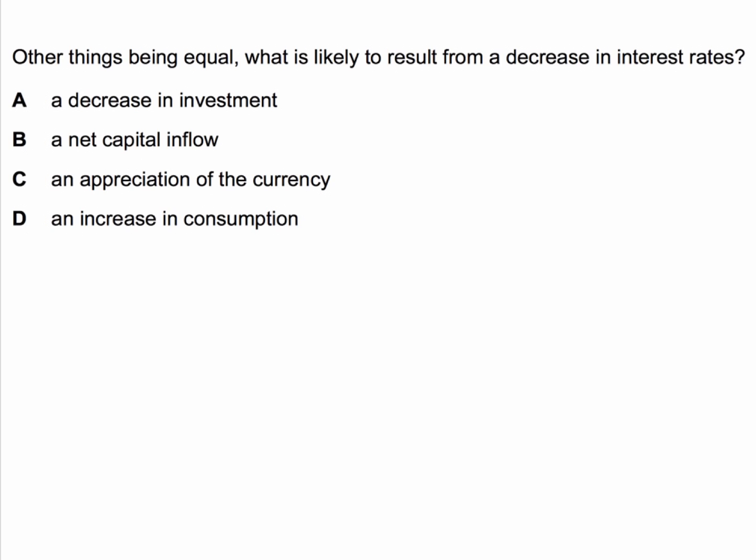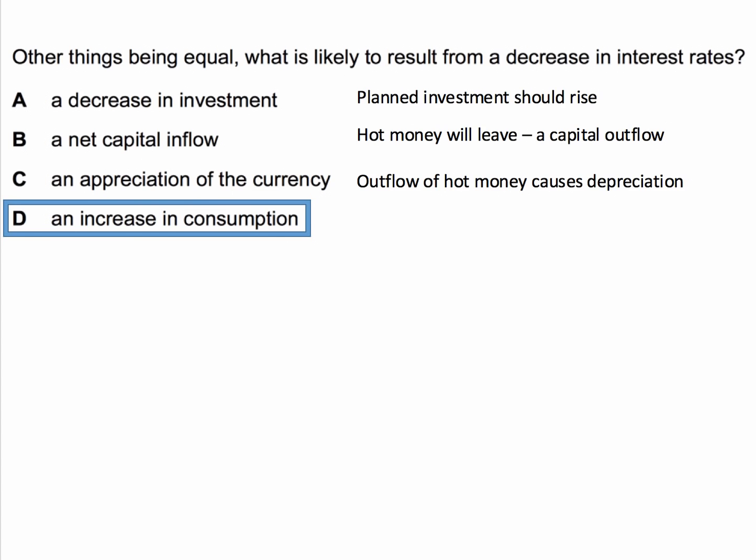A fall in interest rates is of course an expansionary monetary policy. The likely effect is D — an increase in consumption. Interest rates going down normally causes an expansion of household spending, a fall in the propensity to save, and an increase in the propensity to consume. Option A is wrong because a fall in interest rates should cause planned capital spending to increase.